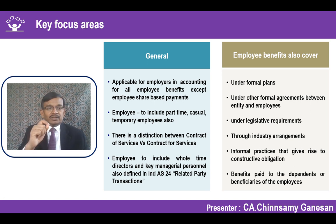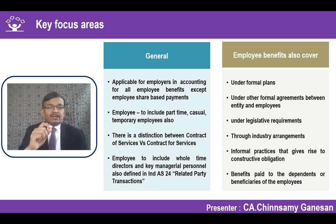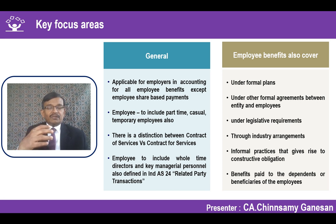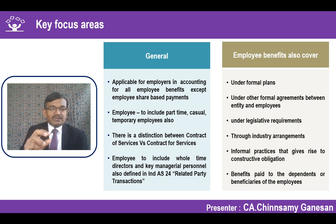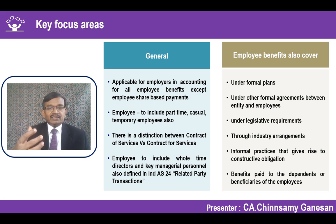Benefits may also arise from legislative requirements or statutory provisions. For example, gratuity is covered by the Payment of Gratuity Act. Similarly, employees working in plantations may statutorily be required to receive warm clothing, woolen blankets, etc. Safety gear provided in industries where employees are exposed to hazardous gases or chemicals is also an industry arrangement that qualifies as an employee benefit.